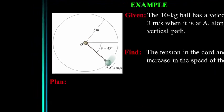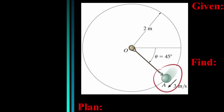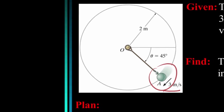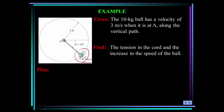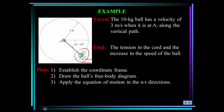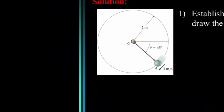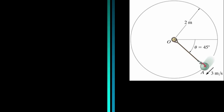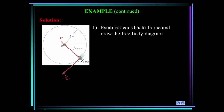Here's an example: a 10 kilogram ball has a velocity of 3 meters per second when it is at point A. Find the tension in the chord and the increase in the speed of the ball. The plan is to establish a coordinate frame, draw the free body diagram, and apply the equation of motion in the normal and tangential directions. I'll put the coordinate frame on the particle at point A, with the normal direction towards the center of curvature and the tangential direction in the positive velocity direction. The free body diagram shows the tension in the chord and the weight of the ball, with the angle being 45 degrees.